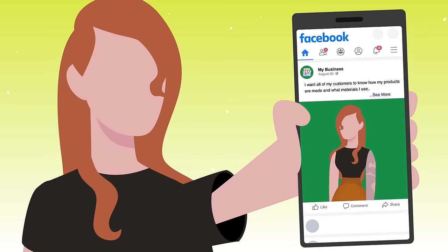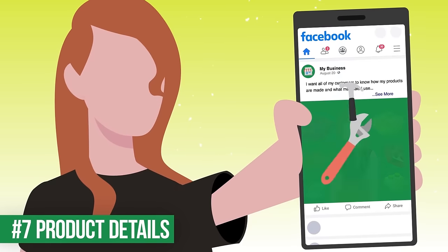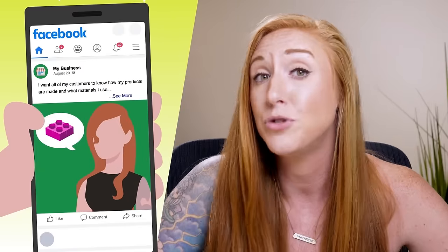Another idea is to talk about different materials or tools involved in your business. If you're a digital business, this could be the programs you use on a daily basis — highlight something you've really enjoyed and share that with others who could benefit. If you're a physical product seller, you could talk about the actual materials used in your products, why you chose them, or the tools involved in making them. People want to know where things come from.